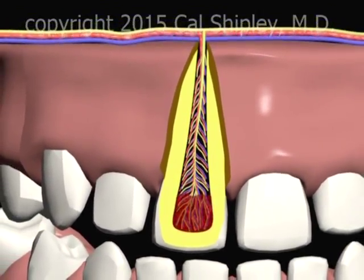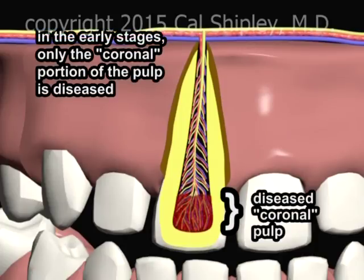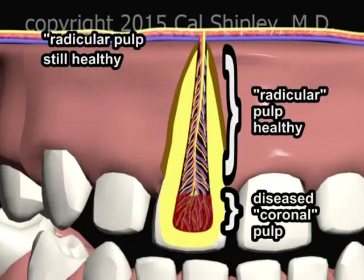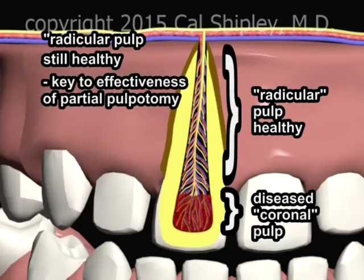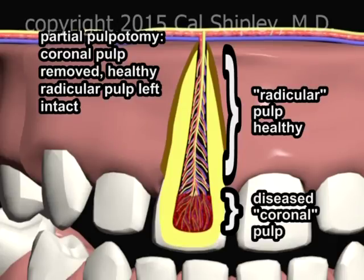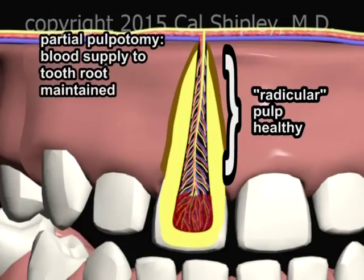Looking at a cross-sectional view of the tooth from the front, we can see that the process of pulpitis initially affects only the so-called coronal portion of the pulp. At this stage of the process, the radicular portion of the pulp remains unaffected and healthy. The fact that the radicular pulp is still healthy in the early stages of pulpitis is the key to the effectiveness of the partial pulpotomy procedure. In the partial pulpotomy procedure, only the diseased coronal pulp is removed, leaving the healthy radicular pulp intact. Leaving the healthy radicular pulp intact maintains the blood supply to the root area of the tooth.